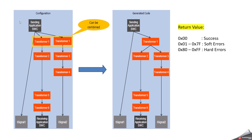In this diagram, we have a sending application software component with multiple transformers (transformer 1 and transformer 2) which can be combined when the RTE generates code. This is associated with iSignal2, and the receiving application software component has iSignal1. The possible return error code values are: 0x00 means success, 0x01 to 0x7F is planned and reserved for soft errors, and 0x80 to 0xFF is for hard errors.